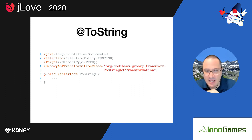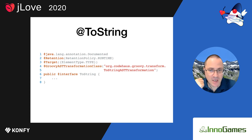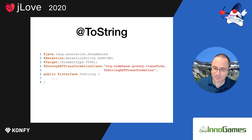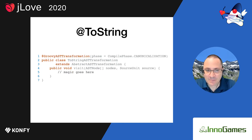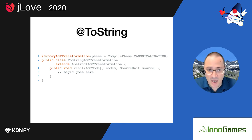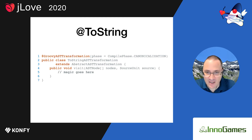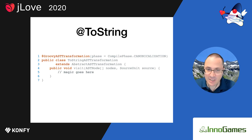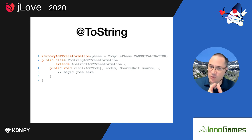It's thanks to that particular link that the compiler knows, whenever it encounters an element annotated with @ToString, to invoke the code provided by the ToString AST transformation type. The implementation must implement the ASTTransformation interface or extend from AbstractASTTransformation, giving you access to the visit method. The nodes provided are the annotation and the annotated thing — which could be a class node, method node, property node, or something else. From there, you can traverse the AST hierarchy and add or remove nodes.